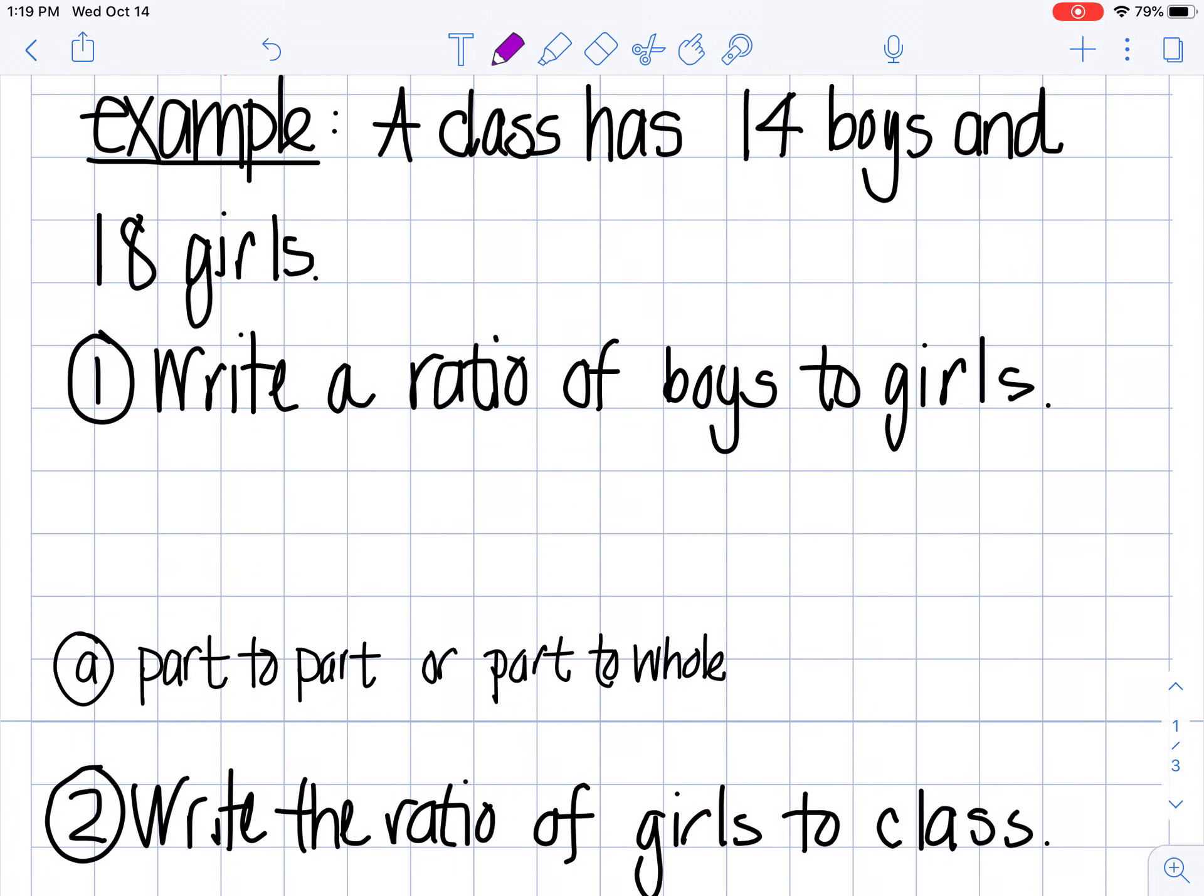A class has 14 boys and 18 girls, and I want you to write a ratio of boys to girls. So I like to set this up, I like to write it as boys to girls. So I want you to think of, what is the number that represents boys? If you said 14, you are right, 14 boys. What's the number that represents the number of girls in this class? If you were thinking 18, you were correct. So my ratio of boys to girls is 14 boys to 18 girls.